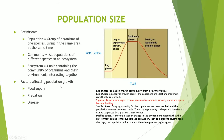Let's take a look at population size. Populations have to grow from somewhere and go through various stages. First, some definitions: a population is a group of organisms of one species living in the same area. A community is all populations of different species in an ecosystem. An ecosystem is a unit containing the community of organisms and their environment, in which they interact together. Factors that affect population growth include food supply, predation, and disease. If you have a disease, the population size will decrease. If you have high predation, the population size will also decrease. If food supply is high, the population can grow, but if there is low food supply, it will drop.